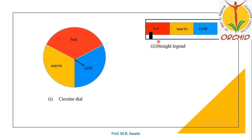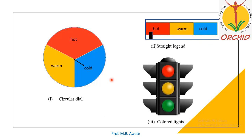Again, straight legend: the pointer can move linearly to indicate whether the system is hot, warm, or cold. The third type is colored lights — traffic signals are the best example, with red, orange/yellow, or green indicating the state of a system without giving any value. All these displays — circular dial, straight legend, and colored lights — come under qualitative displays.